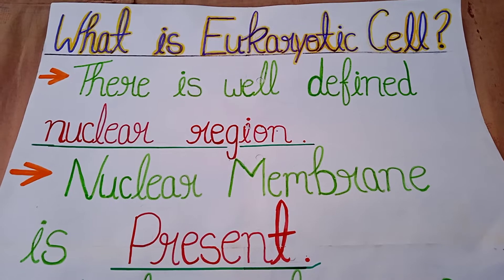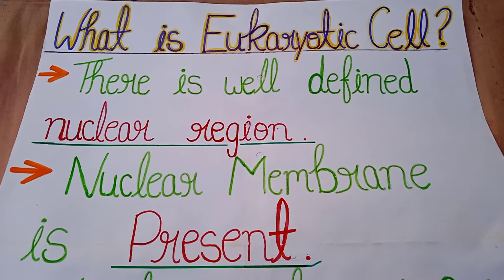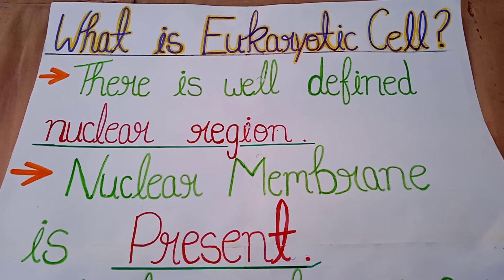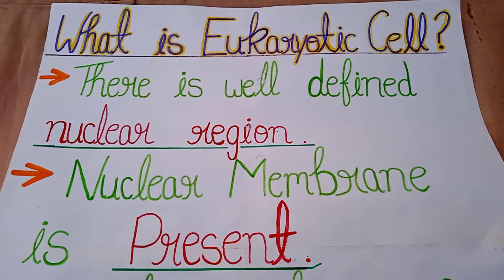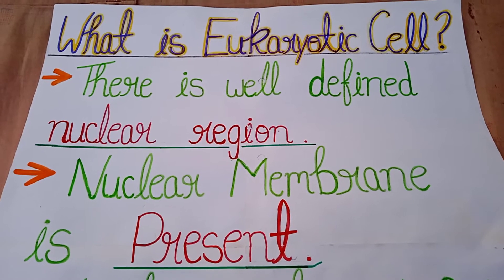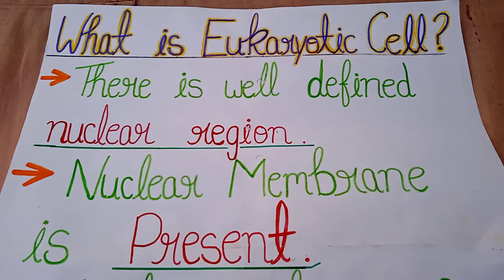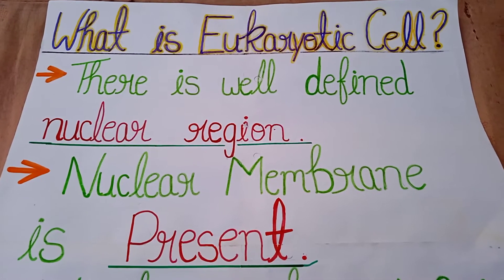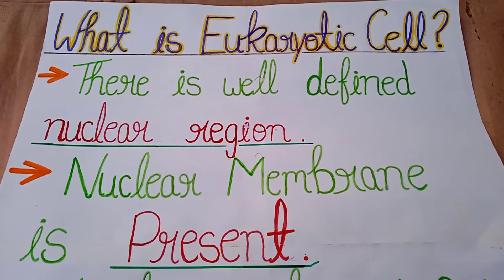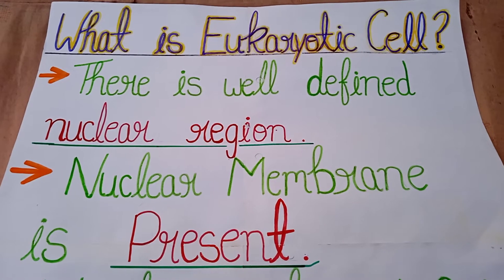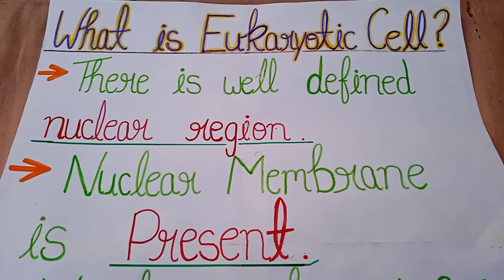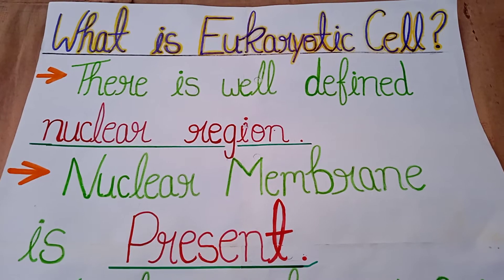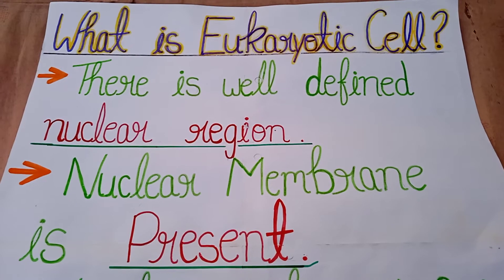Hello everyone, welcome to my YouTube channel Bio Diary. Today I will teach you what is a eukaryotic cell. First, the meaning of eukaryotic is 'true nucleus,' and the full meaning of eukaryotic cell is: ek aisa cell jiske paas true nucleus present ho — a cell that has a true nucleus.